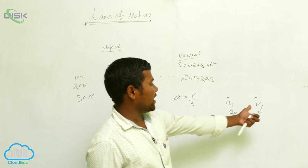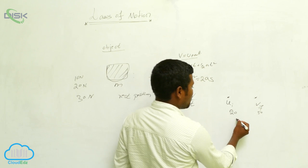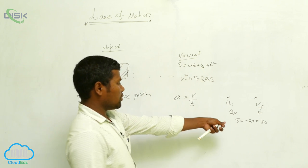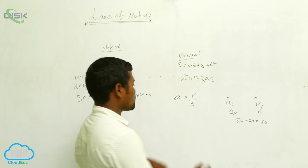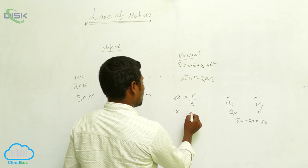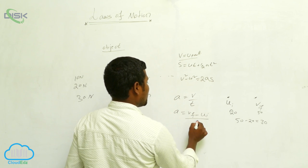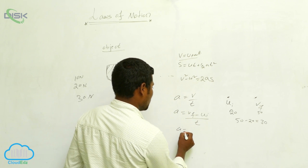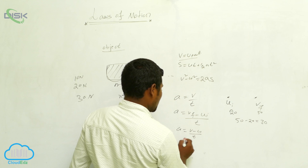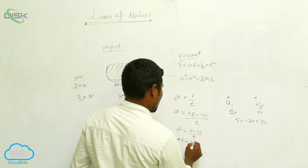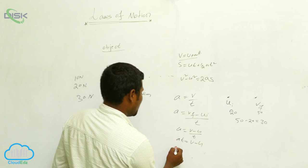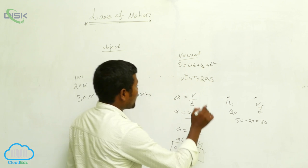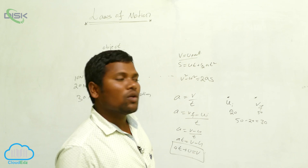In the same manner, the formula becomes: a = (v - u) / t, where vf is final and vi is initial velocity. Rearranging, at = v - u, and therefore v = u + at. This is how we derive the first law of motion equation.